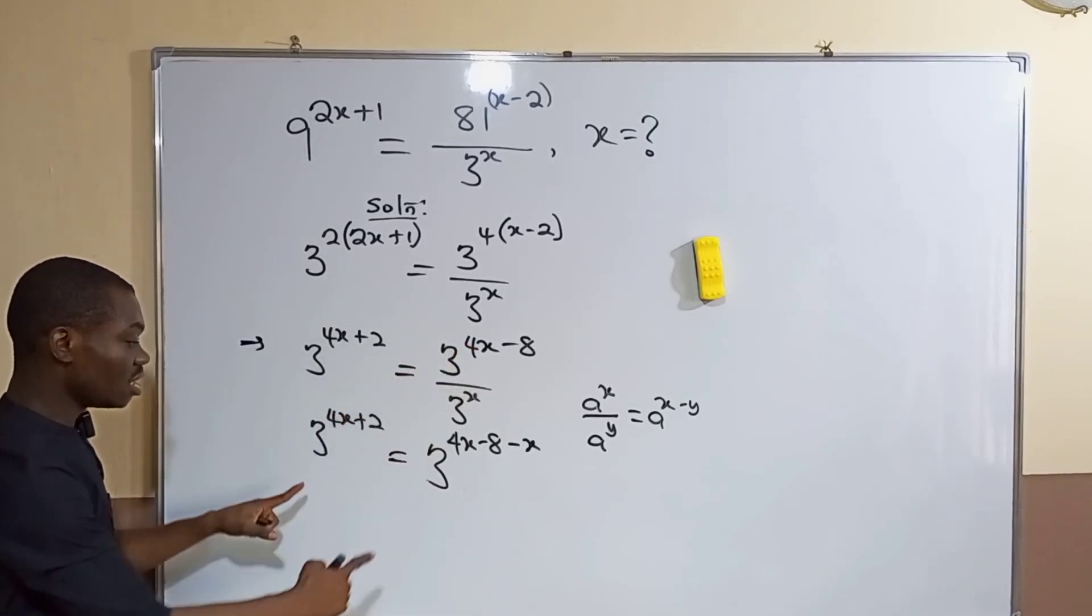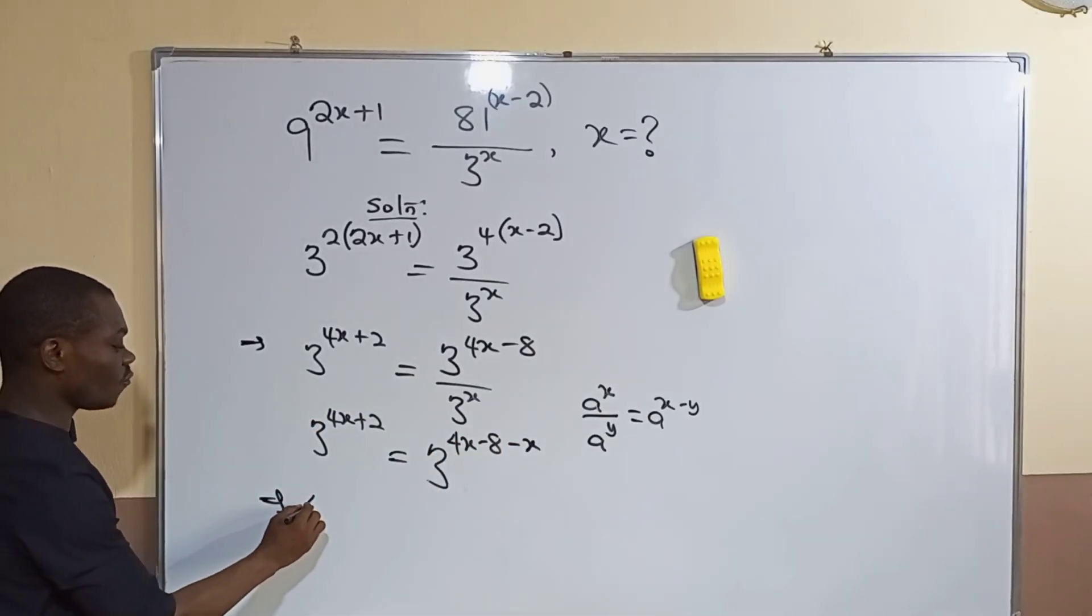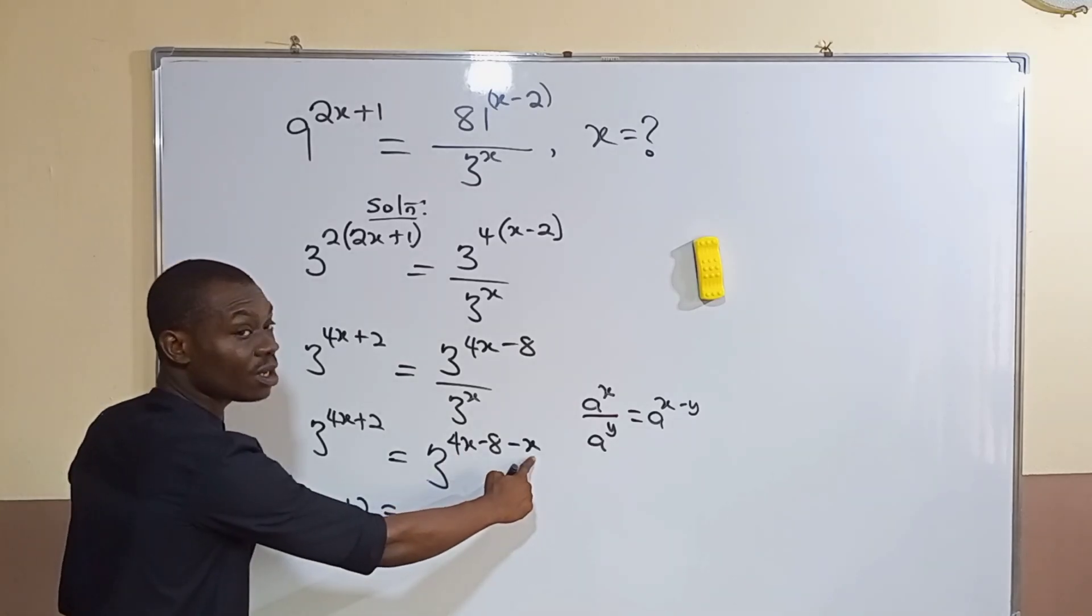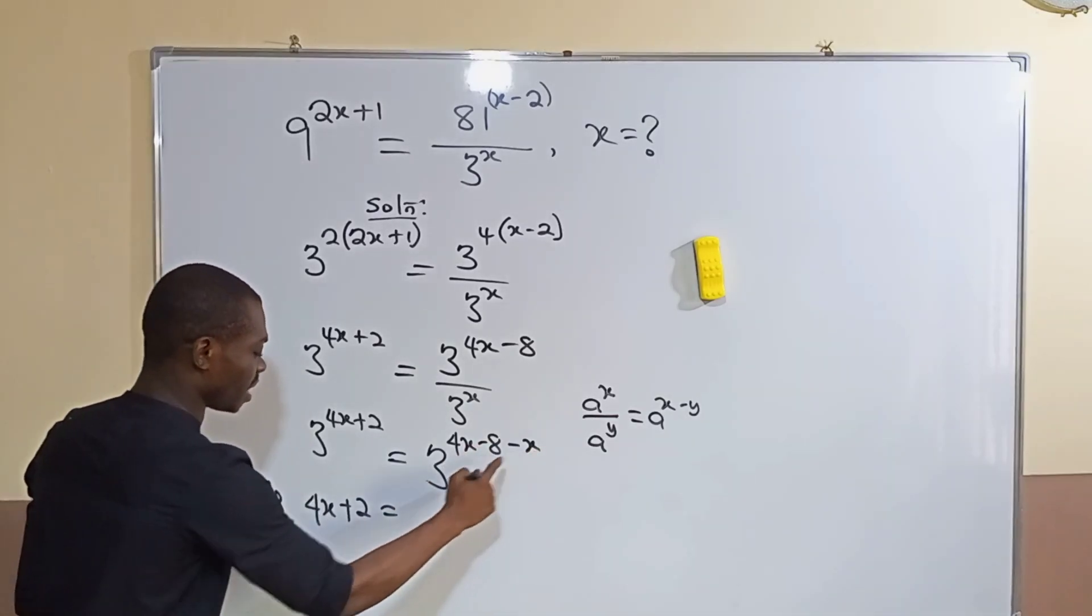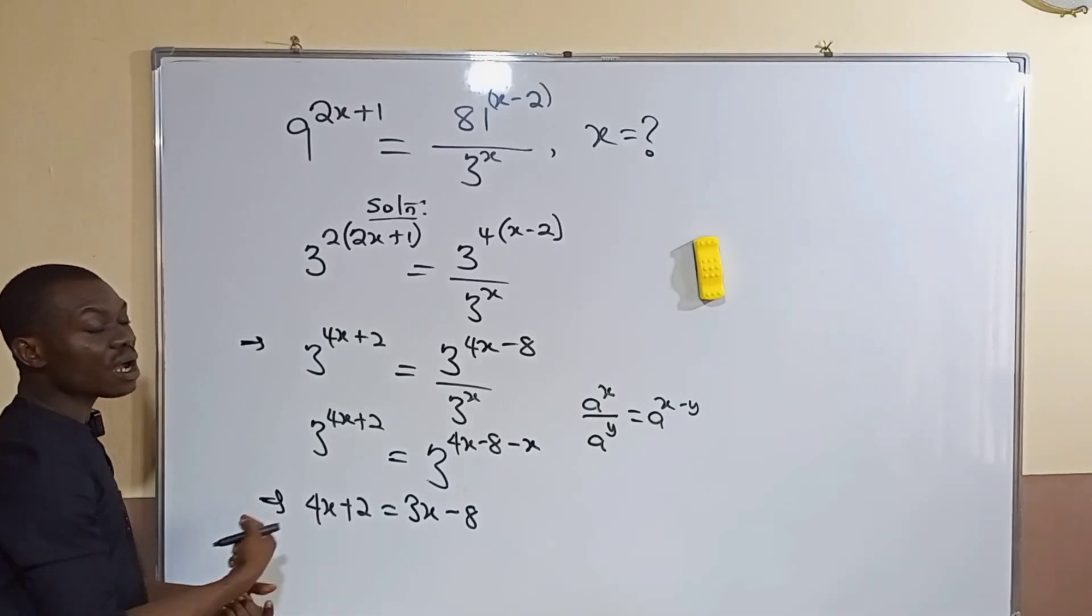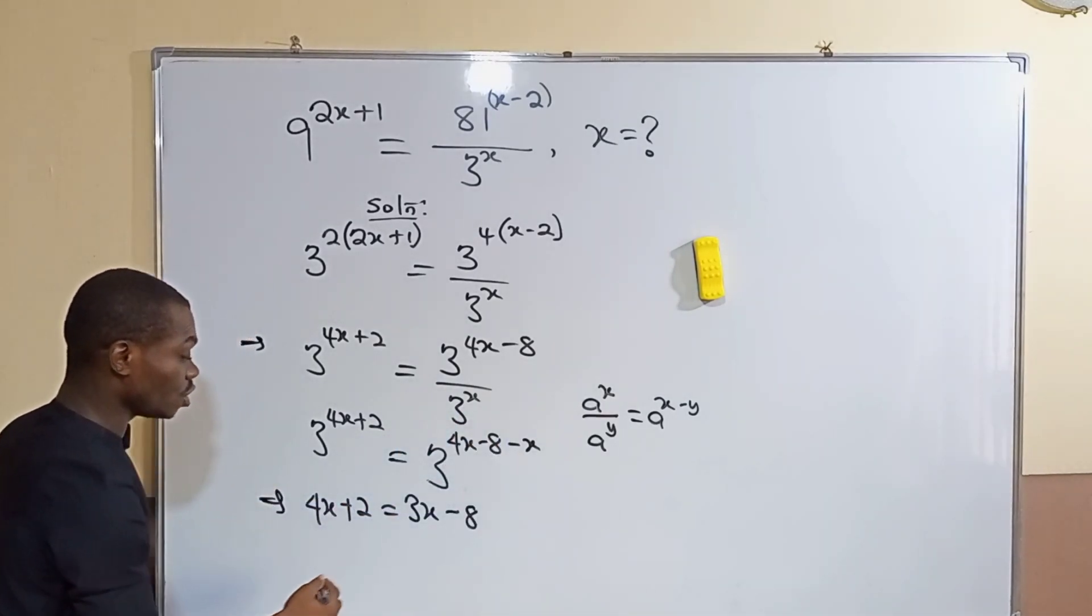You are done. Immediately you have achieved this, the bases are now the same, so their power should be the same. 4x plus 2 must be equal to this other one. What is this? 4x minus x is 3x minus 8. So I will collect items: let 3x come here and let 2 go to the other side.